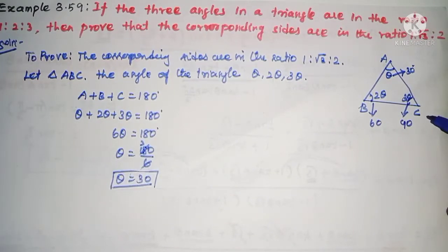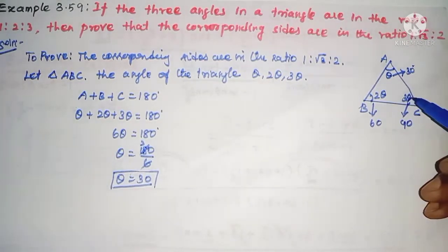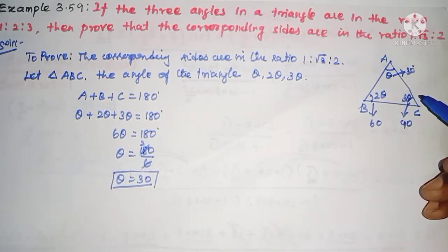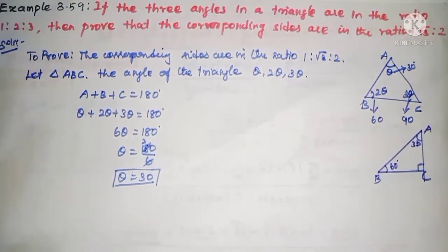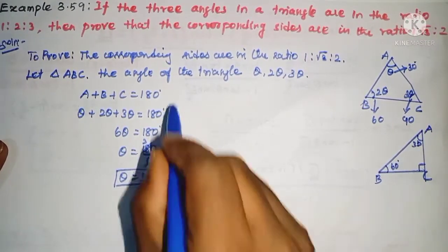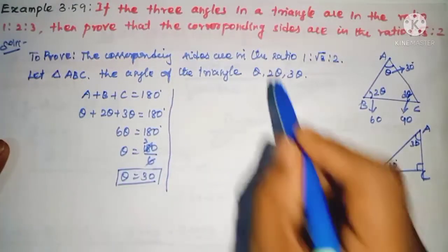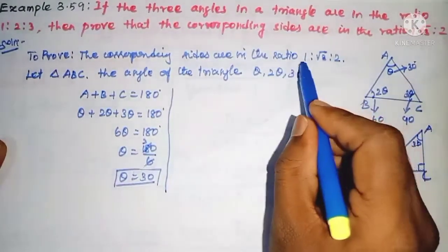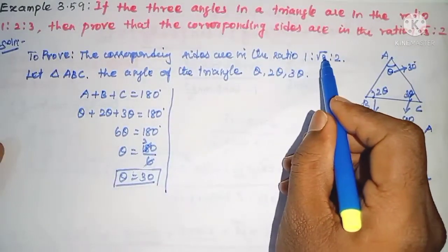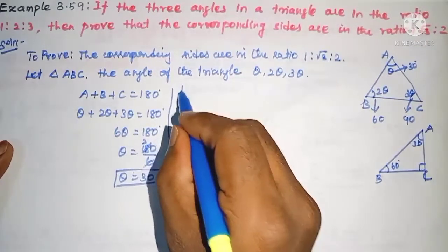So the angles are 30°, 60°, and 90°. This is a right angle triangle. Now we have to find the corresponding sides in the ratio 1:√3:2.